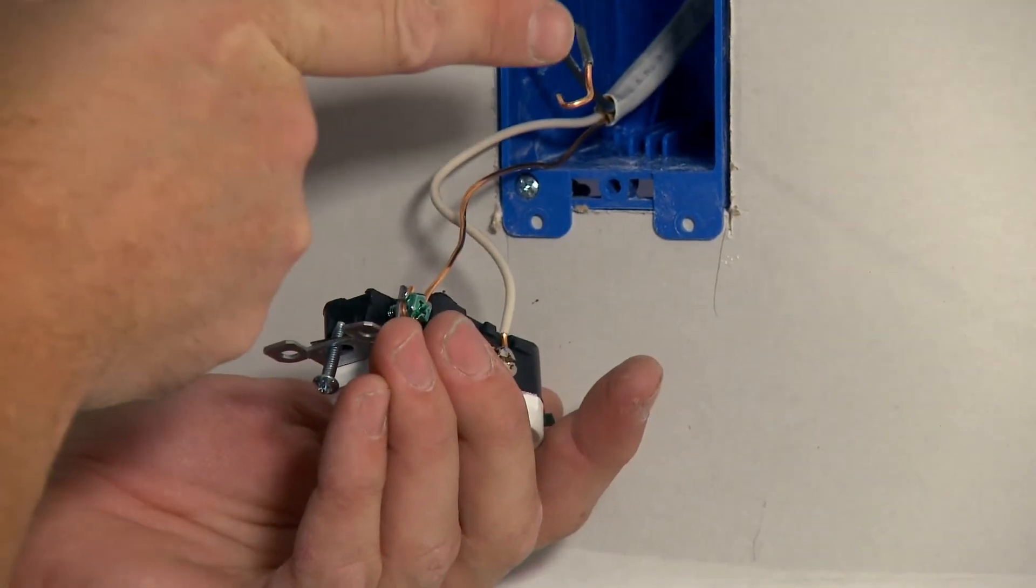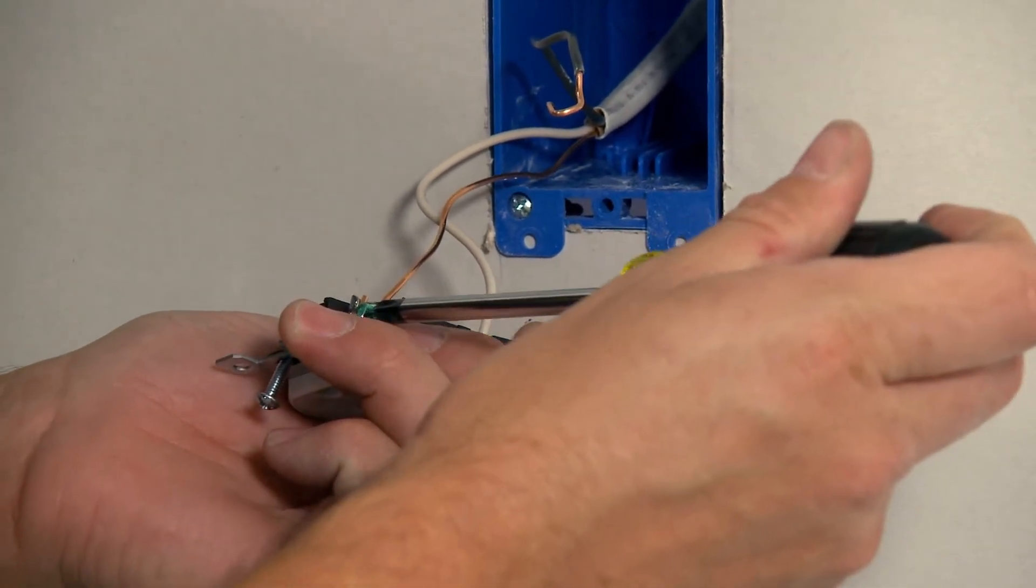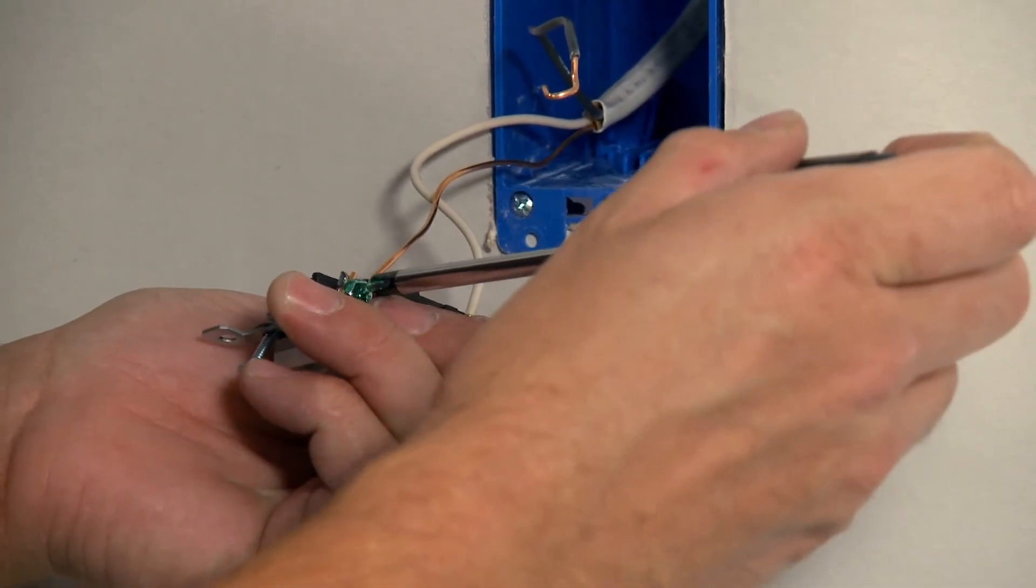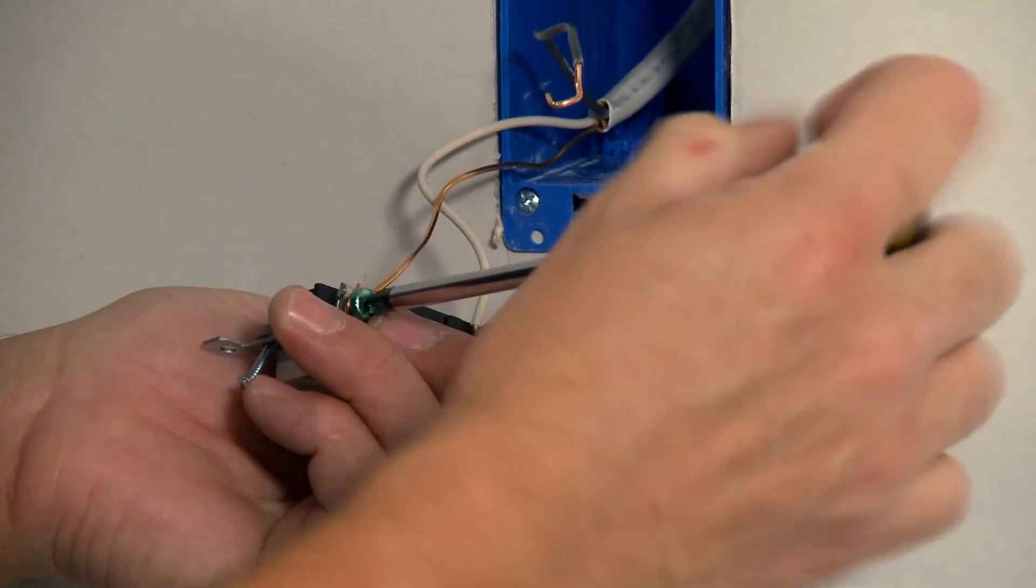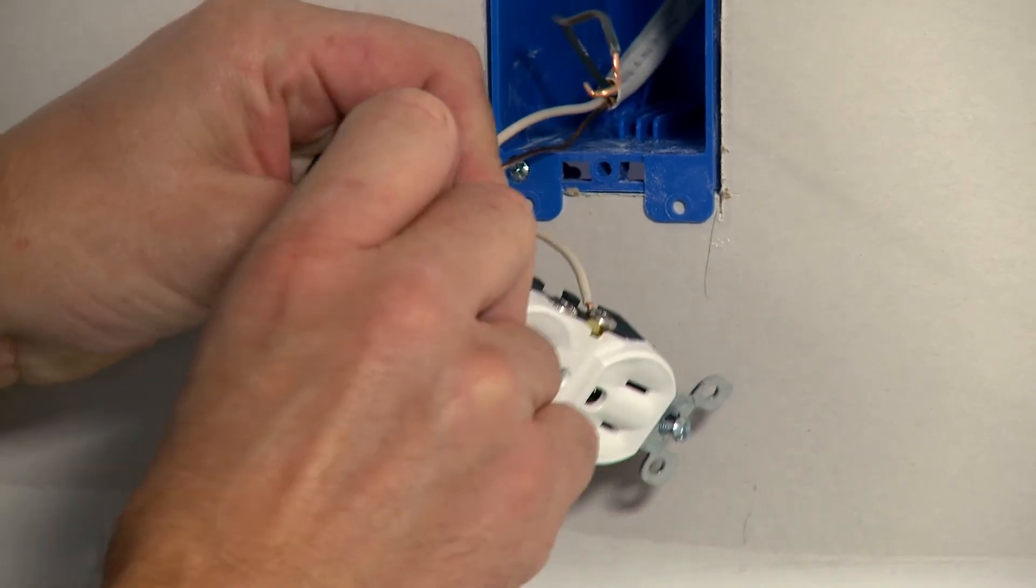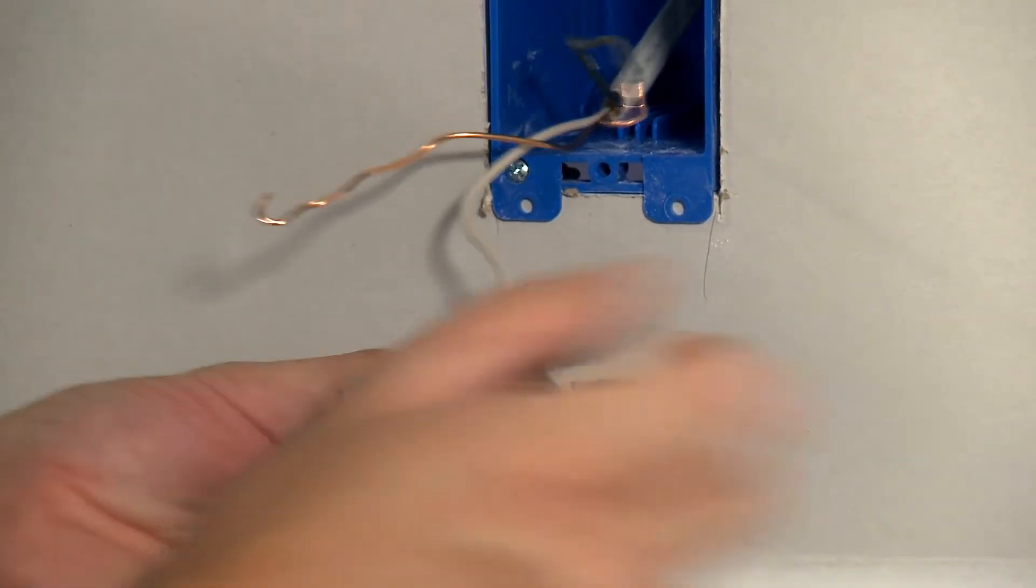And as long as we don't see any damage up against the insulation or any place else that makes us think that wire is prone to breakage, then it can be reinstalled just like it is. You don't have to strip down a fresh section or anything. Loosening the ground screw and now the neutral.